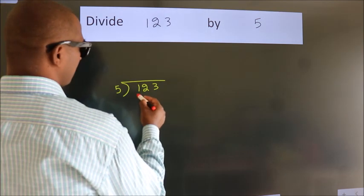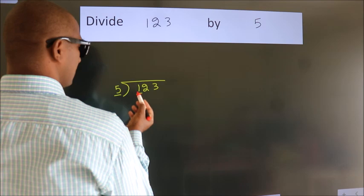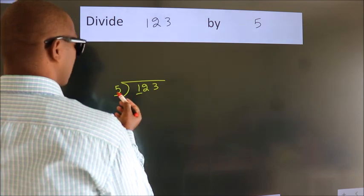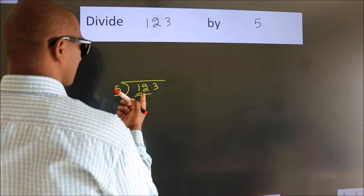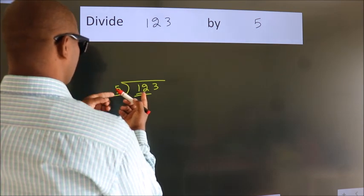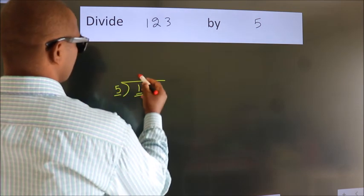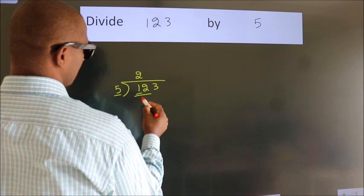Here we have 1, here 5. 1 is smaller than 5, so we should take two numbers: 12. A number close to 12 in the 5 table is 5 twos, 10.